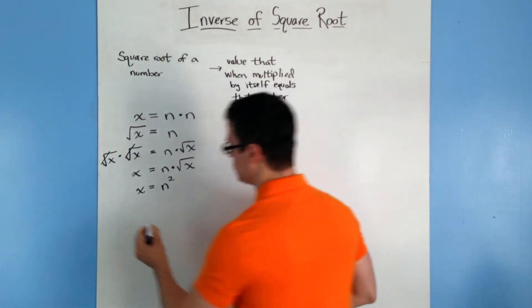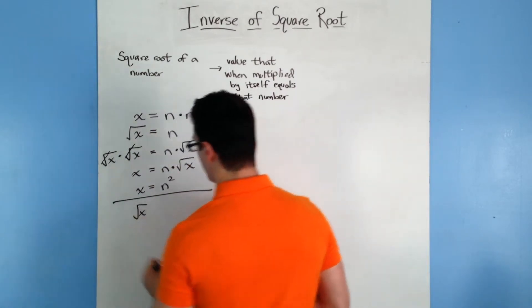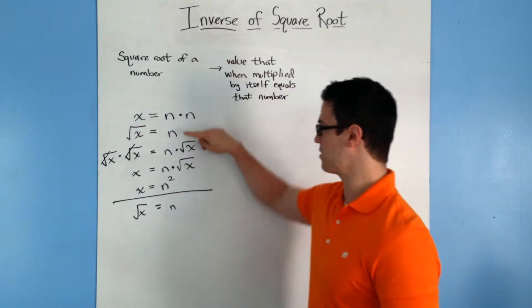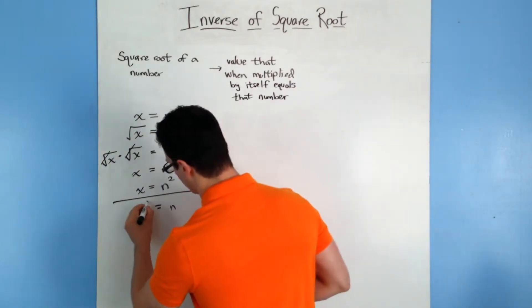Another way you can write it is using squared. So say we have the square root of x is equal to n. Another way, so we're going to start from here, basically, down here. Another way to get rid of the square root is just to square both sides.